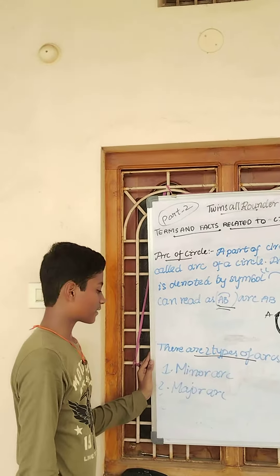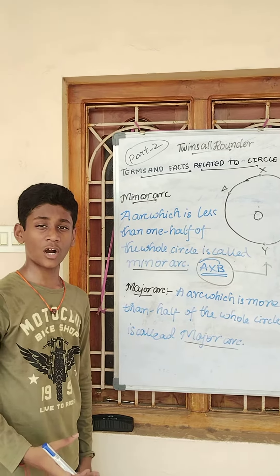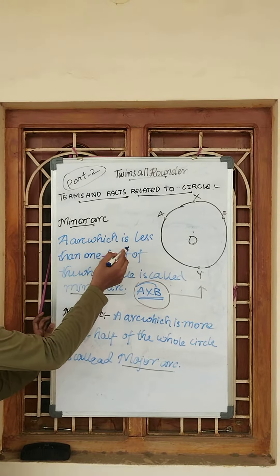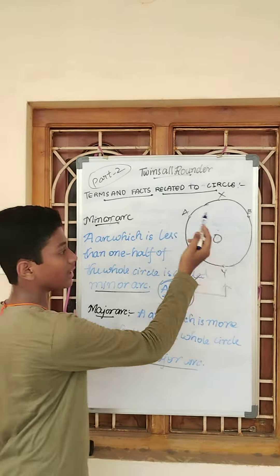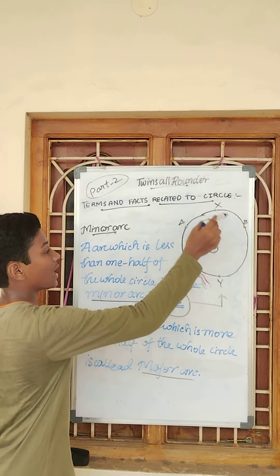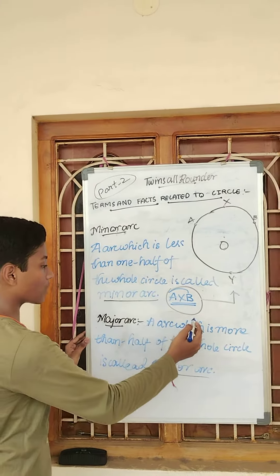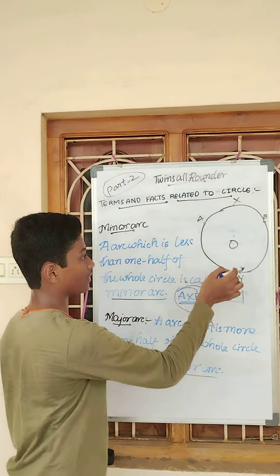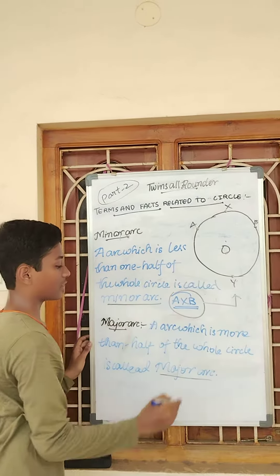There are 2 types of arcs. Those are minor arc and major arc. Minor arc: an arc which is less than one half of the whole circle is called a minor arc. As you can see in this image, arc AXB is less than half of the circle. Major arc: an arc which is more than half of the whole circle is called a major arc. As you can see in this image, arc AYB is greater than half of the circle.